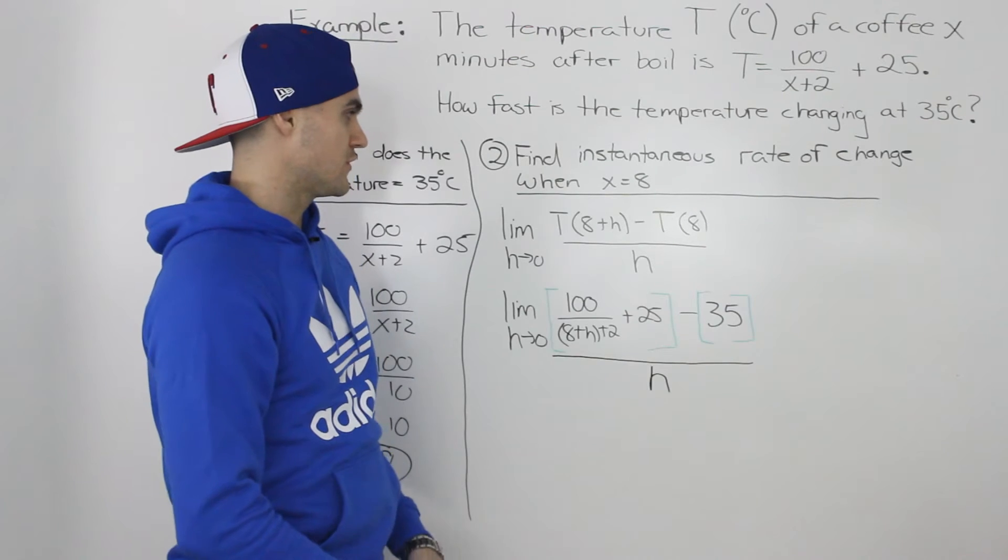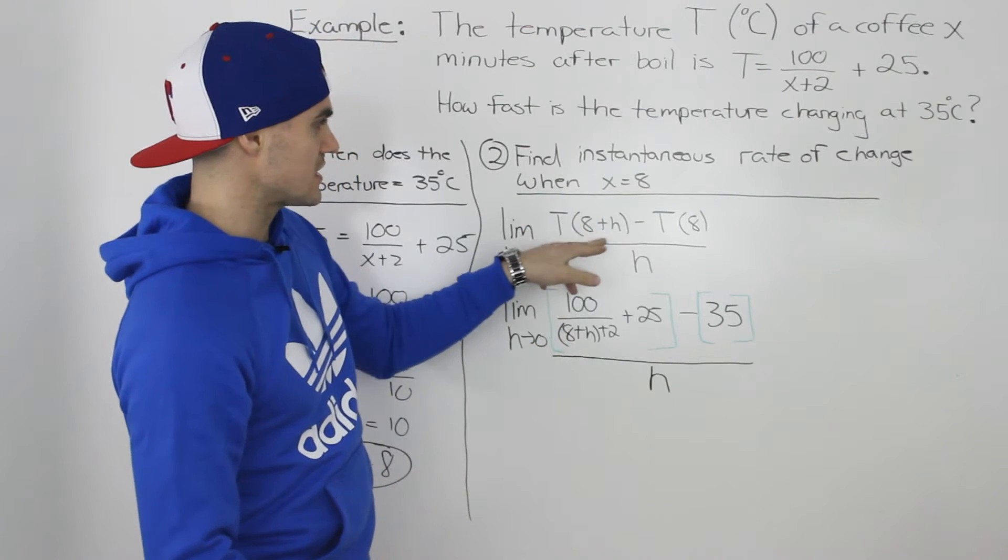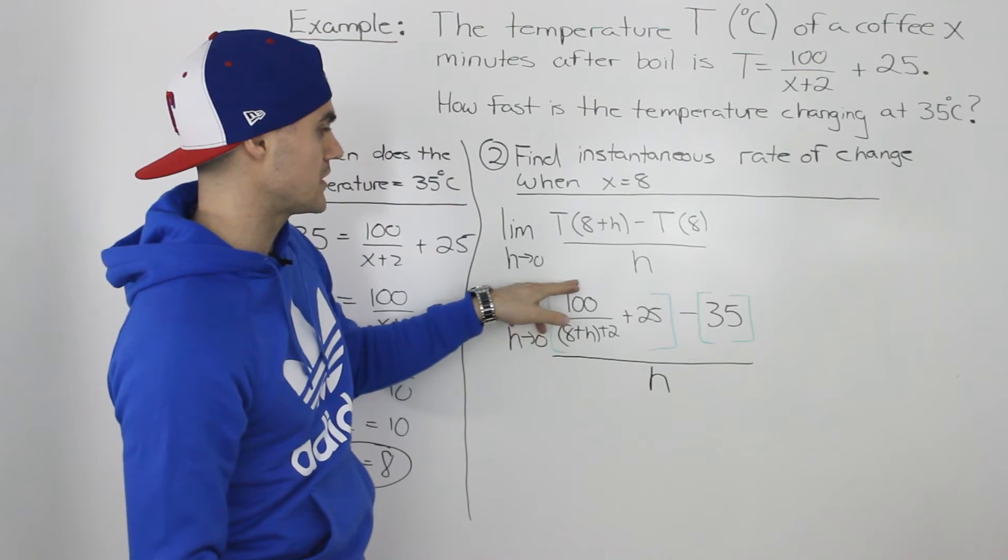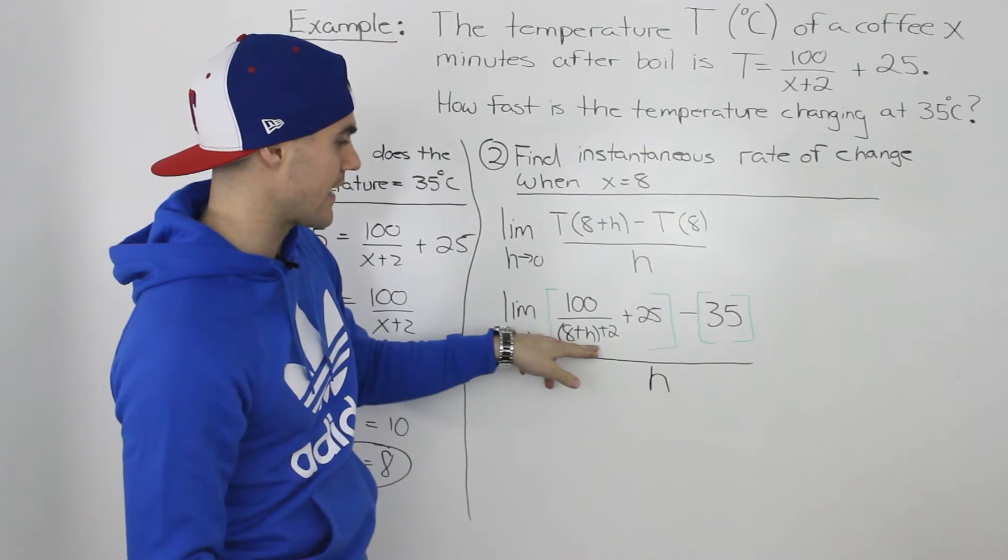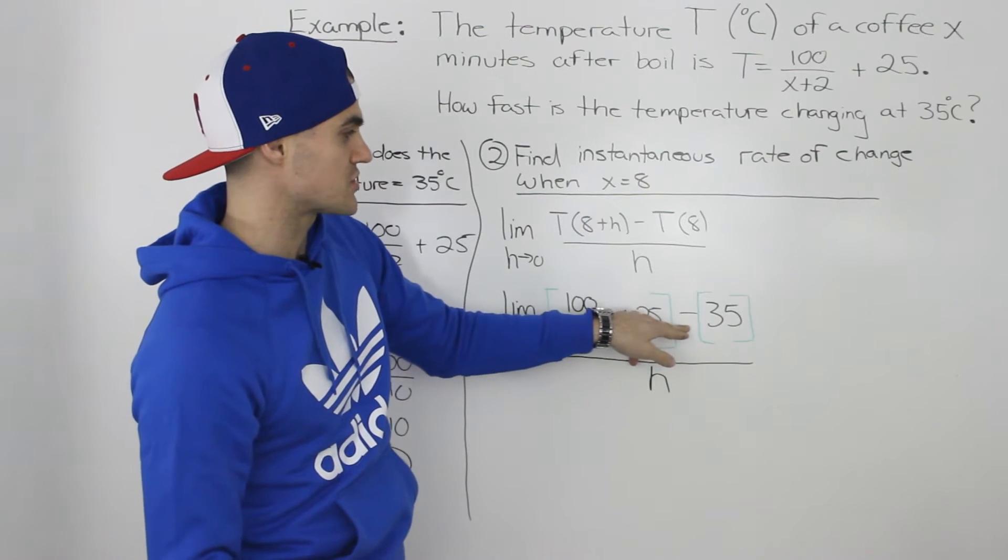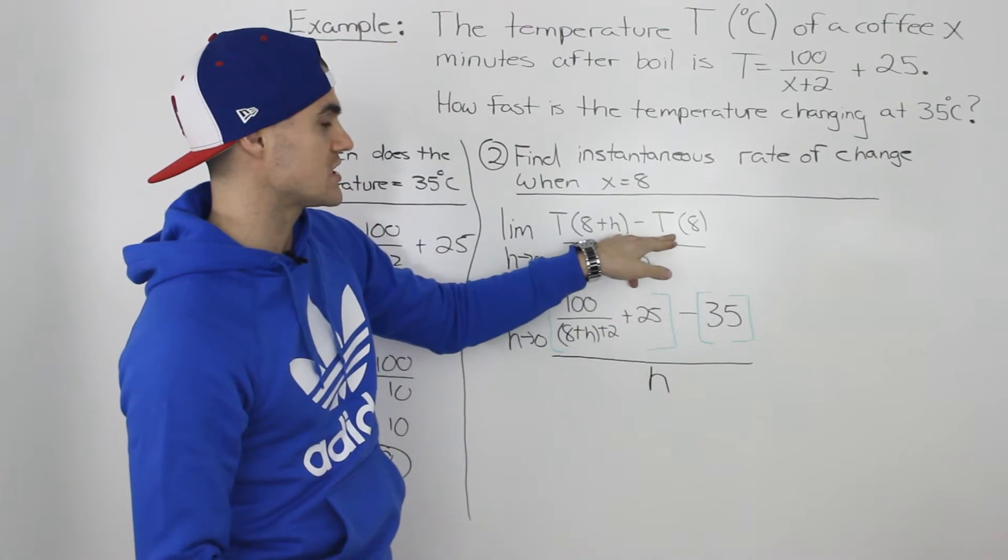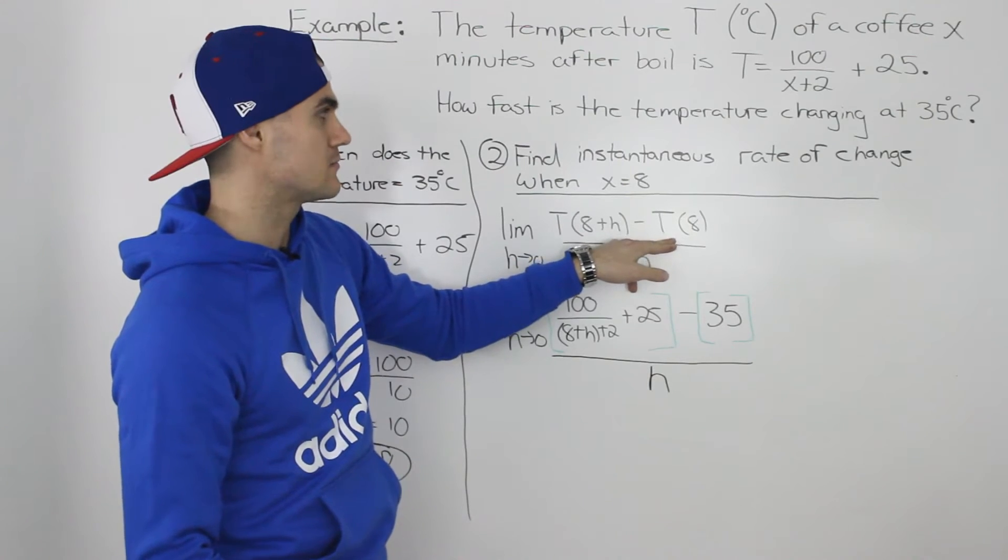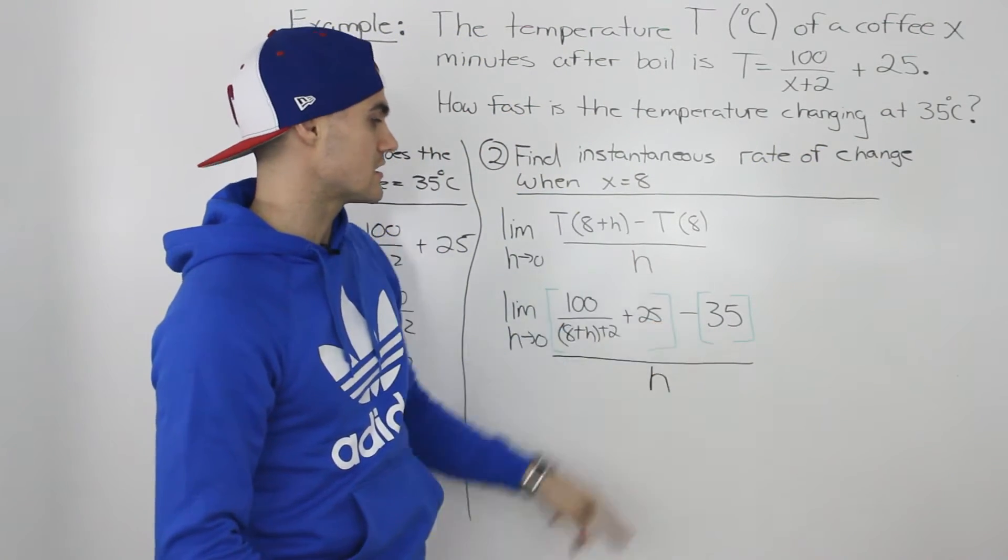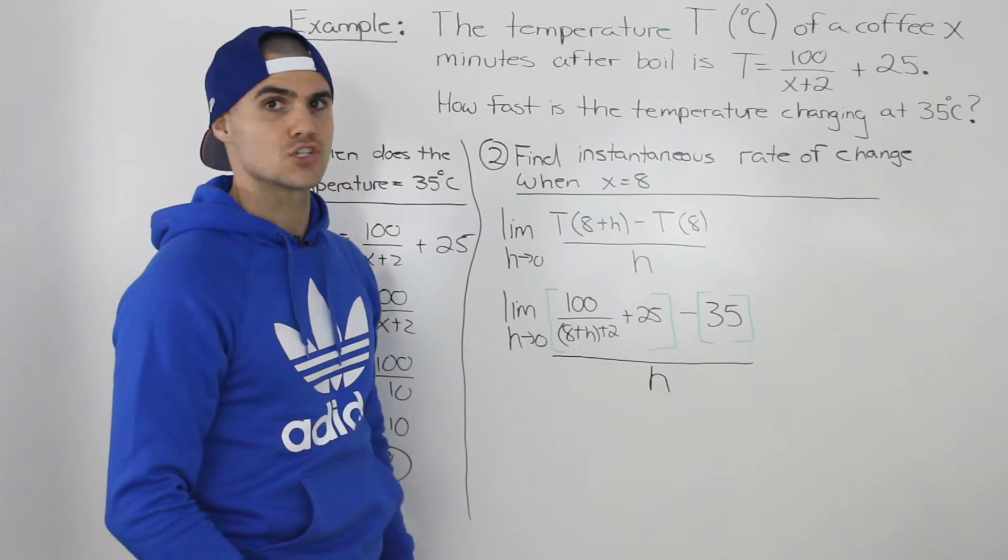So then further simplifying the difference quotient, T of 8 plus h, we would plug in just 8 plus h for this x value. So we'd be left with 100 over 8 plus h plus 2 plus 25. And then we're subtracting 35, which is equal to T of 8. Basically, we were given that at an x value of 8, T is 35. And this is all over h.